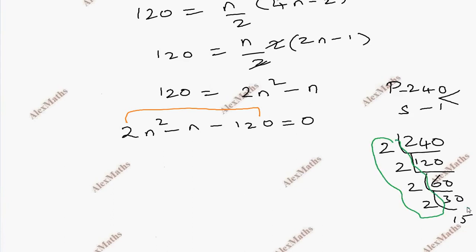So 16 into 15. Splitting the middle term: 2n square minus 16n plus 15n minus 120 equals 0.